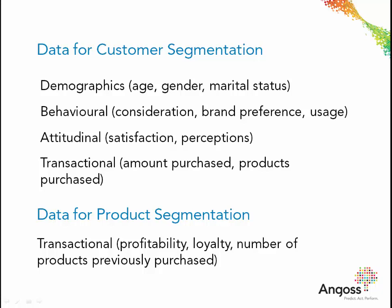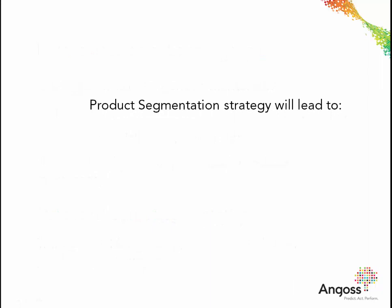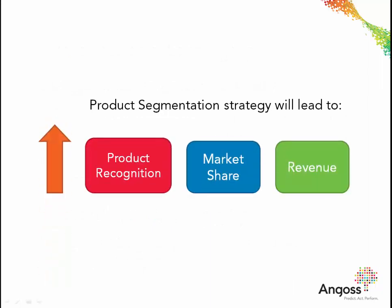The second round of segmentation can be performed using ANGOS strategy trees. A list of product variations is required in order to segment products and assign them to market segments, rather than creating market segments and designing product variations based on those segments. This will lead to an increase in product recognition, market share and revenue.